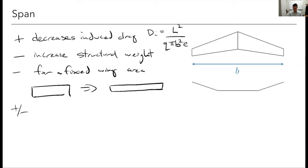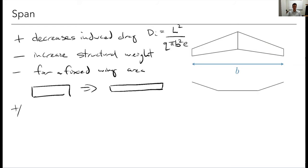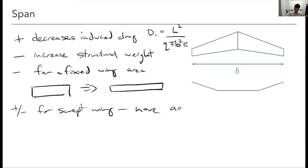One consideration that could be a plus or minus: if I have a swept wing and I increase the span, the aerodynamic center — which you can think of as roughly the center of lift for now — moves back, and that's going to affect the stability of the airplane, as we'll talk about next week. That could be a plus or a minus. By far the biggest trade-off, though, remains drag versus weight.